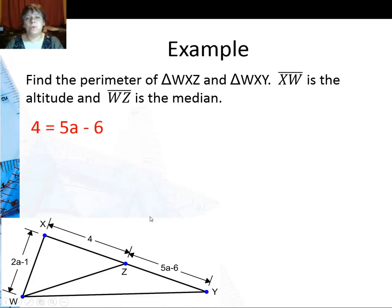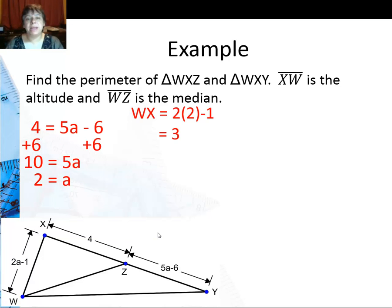So I can set up an equation that 4 equals 5A minus 6. Solving for A I'm going to get A is 2. Now I can substitute that back in to find WX which is 3. And I already know that ZY is going to be 4.